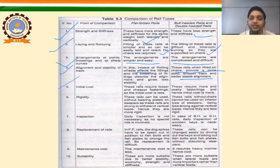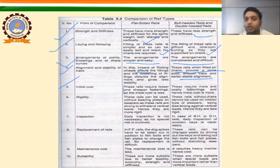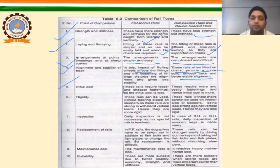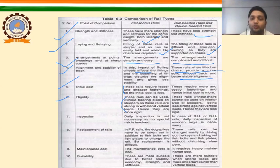For initial cost: flat footed rails require lesser and cheaper fastenings, so the initial cost is less. Double headed and bull headed require more costly fastenings because without chairs and keys you cannot fix them, so the initial cost is more. For rigidity: flat footed rails can be used without bearing plates on the sleepers as they are strong to withstand vertical load, hence they are more rigid.